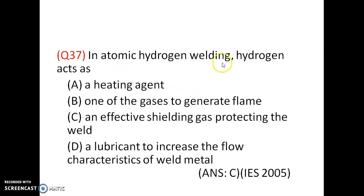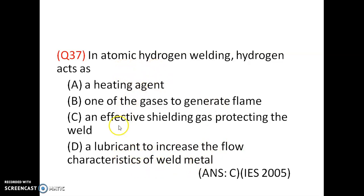In atomic hydrogen welding, hydrogen acts as — options: a heating agent; one of the gases to generate flame; an effective shielding gas protecting the weld; a lubricant to increase the flow characteristics of weld metal. In atomic hydrogen welding, hydrogen acts as an effective shielding gas protecting the weld.